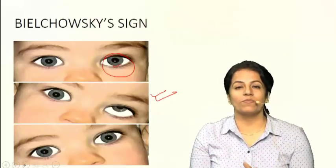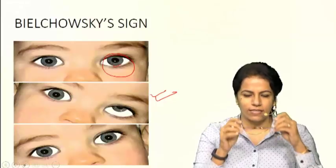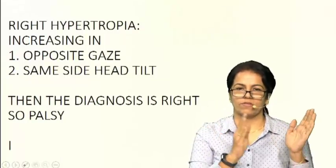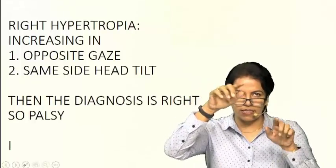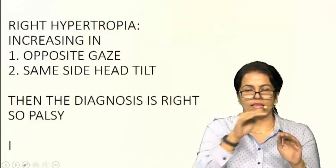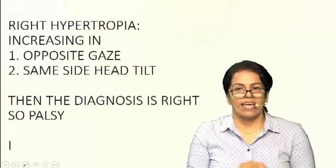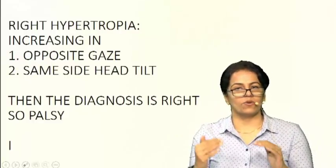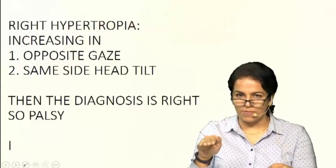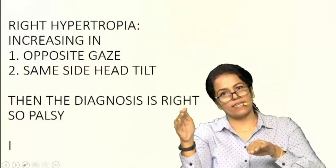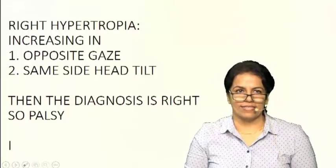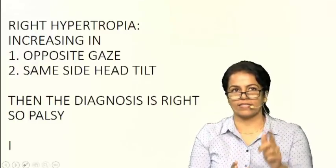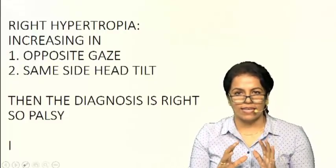Let's summarize quickly for exam purposes. For right hypertropia: any hypertropia which increases on the opposite gaze and on the same side head tilt has to be superior oblique palsy. So if it is right hypertropia increasing on opposite gaze and same side head tilt, it will be right superior oblique palsy. This is one of the quickest methods, and most questions asked in PG entrance exams are answered by remembering these two important points regarding SO palsy.